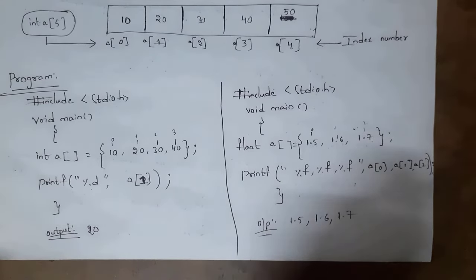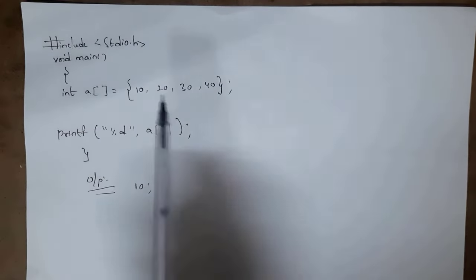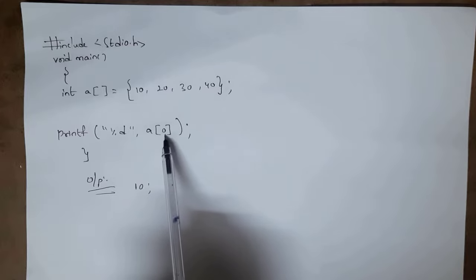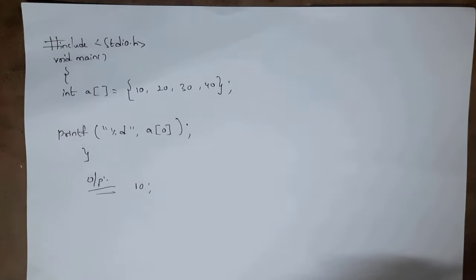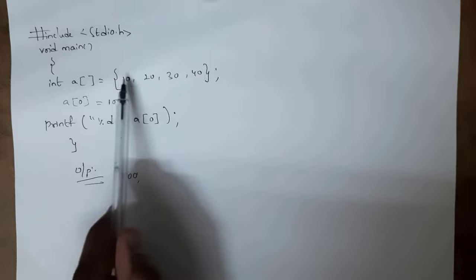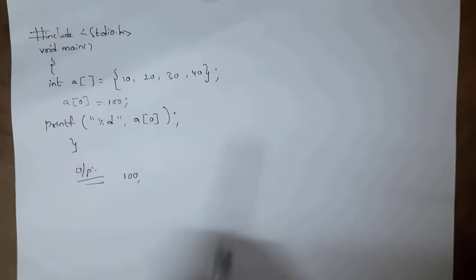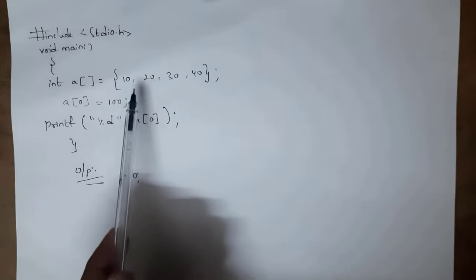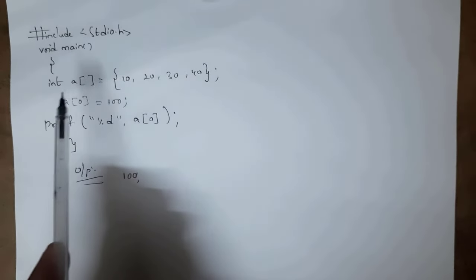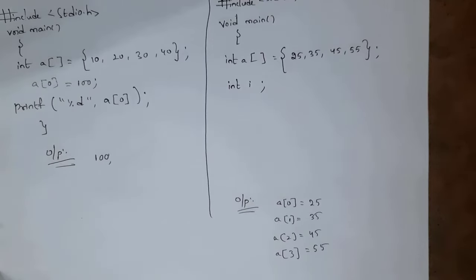In the previous program, I got output 10 from index number 0. But if I want to change that value from 10 to 100, I write: a[0] = 100. That means the value at index 0 is changed to 100, so now the output will be 100. Similarly, if I want to change value 20 to 200, I write: a[1] = 200. This is how we manipulate elements in an array.